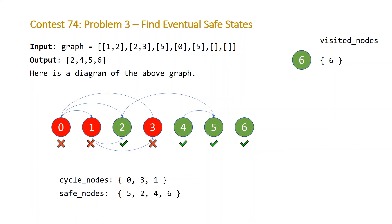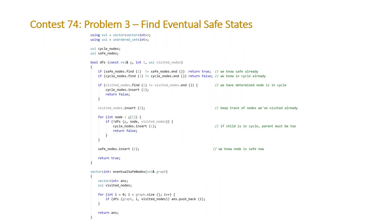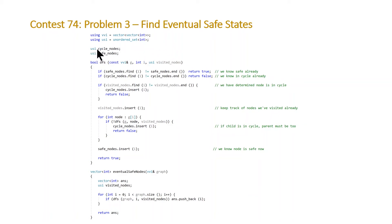That's basically our algorithm, so let's look at the code. At the top we have a couple of type aliases: `vvi` stands for a vector of vector of integers — our graph representation — and `usi` stands for an unordered set of integers. Our cycle nodes and safe nodes are both unordered sets of integers.